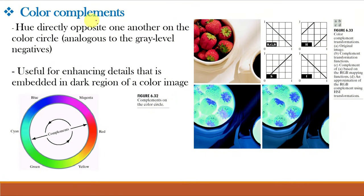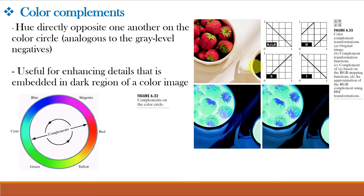The next color transformation is color complements. We know that for grayscale image, when we use complement, white becomes black and black becomes white. For color complements, we find the complement of a color by using the color circle. The color that is located at the diagonally opposite point is the complement of that particular color. For example, the complement of red is cyan and vice versa. Therefore, in this complement image, the red strawberries appear in cyan color and the light green leaves appear in blue color. This complement image gives the photographic negative of a color image and is useful for enhancing details embedded in the dark regions of a color image, as we can see here in this cup of coffee.